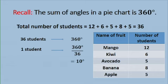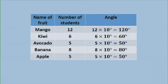Each student will represent 10 degrees. We are now going to construct a second table where we will include the angles representing the different fruits. So for 12 students, it's going to be 12 times 10 degrees. Remember, one student represents 10 degrees.